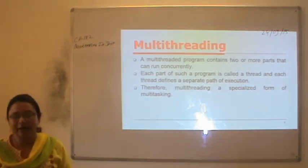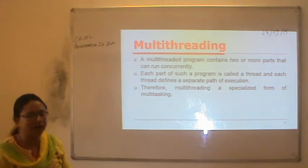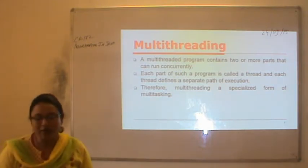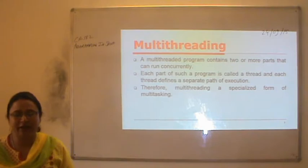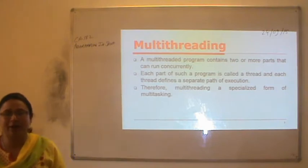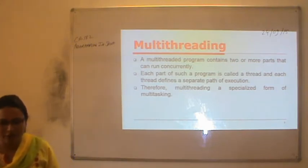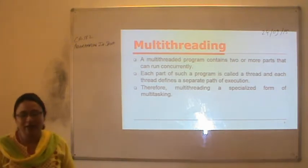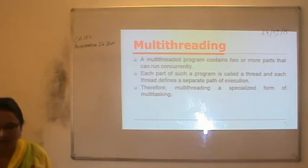A multi-threading program contains two or more parts that can run concurrently. Each part of such a program is called a thread, and each thread defines a separate path of execution. Therefore, multi-threading is a specialized form of multitasking.